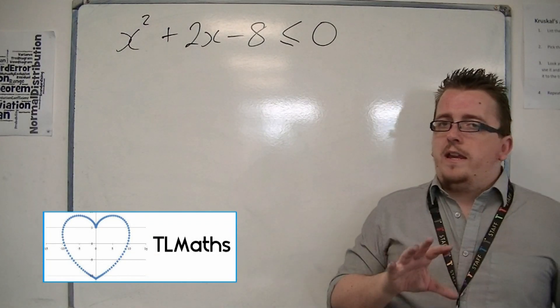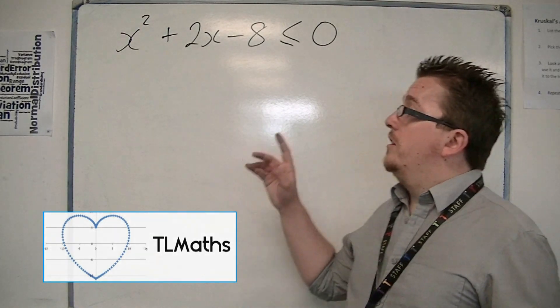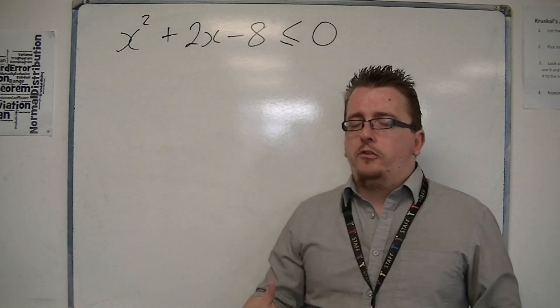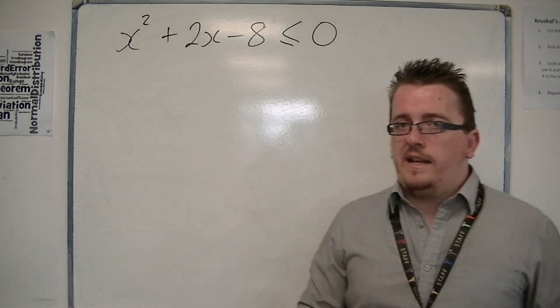So let's say we have a quadratic inequality that looks like this: x squared plus 2x minus 8 is less than or equal to 0.